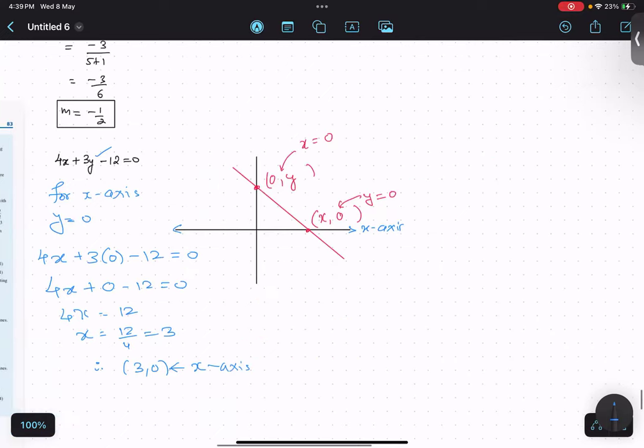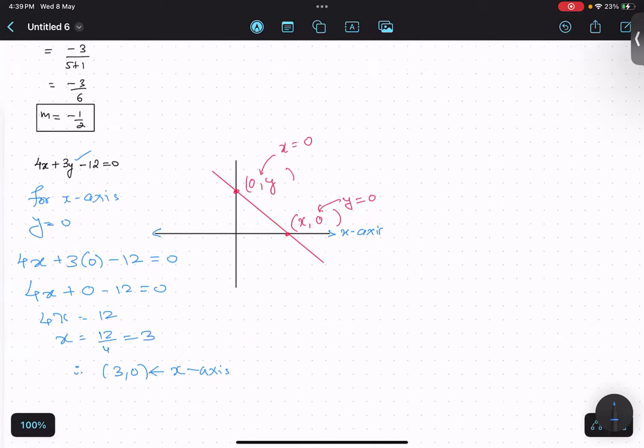So can you tell me for y-axis what should be the step? For y-axis what should I put? Quickly. X equals to 0. Okay, for y-axis. And then y-axis is this line now, this is y-axis line.